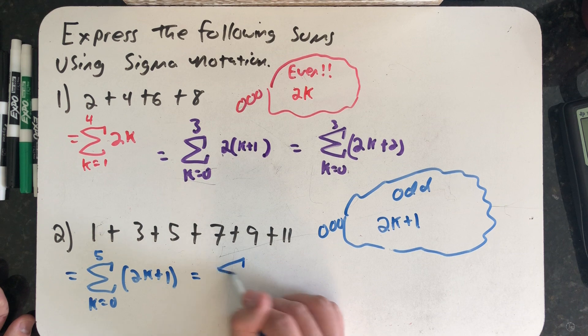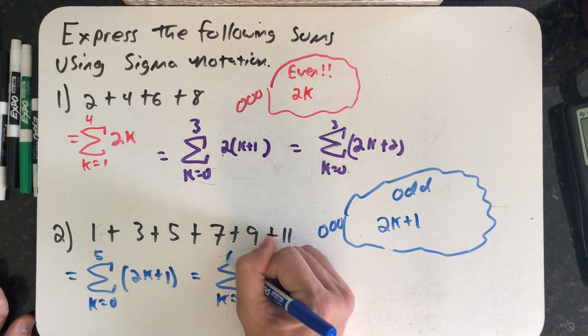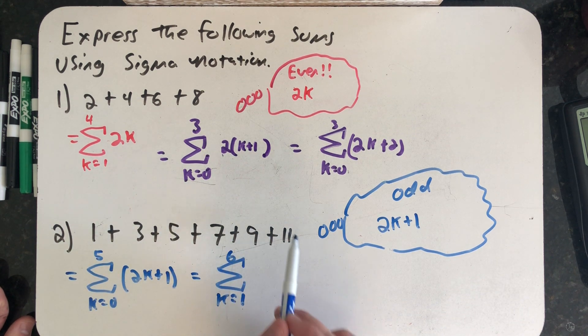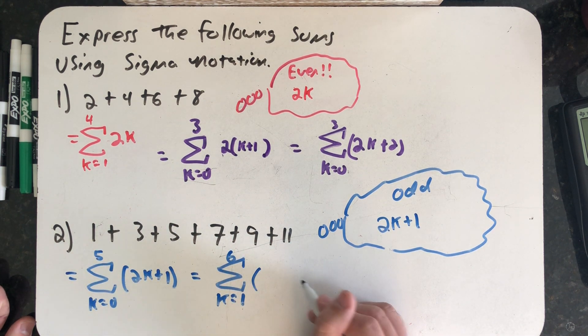Alright, pause the video and let's see if you can write down what the sum should be if I started at 1 and ended at 6. See if you can find the appropriate kth term formula.